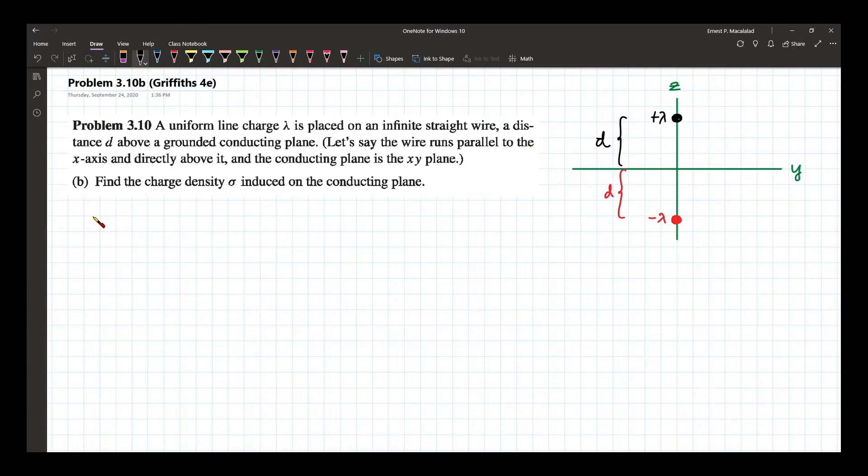We know that the potential in the previous number is given by lambda over 4 pi epsilon naught times ln of y squared plus z plus d squared divided by y squared plus z minus d squared.